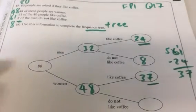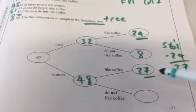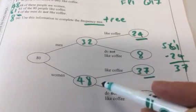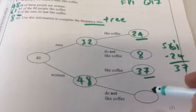So how many women do not like coffee? 37 plus what gives us the 48? 11.